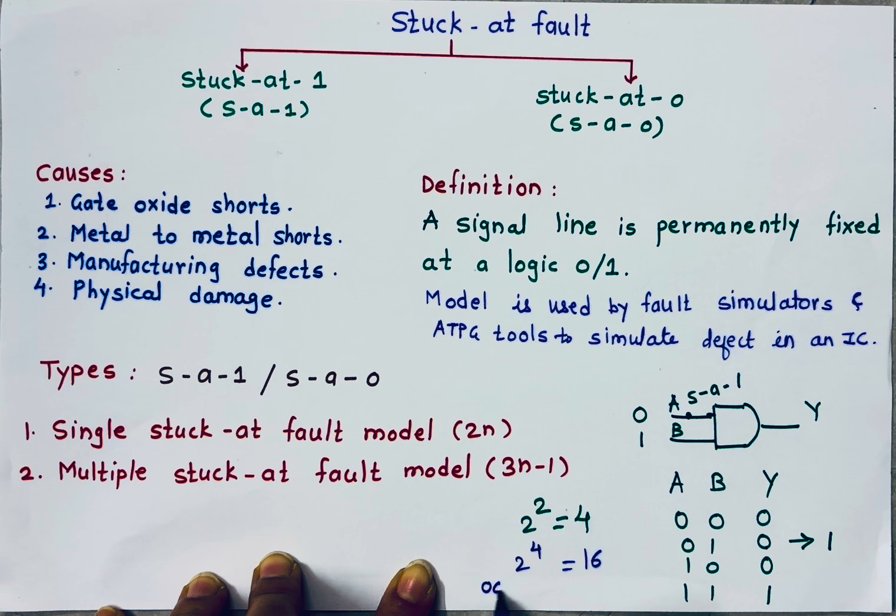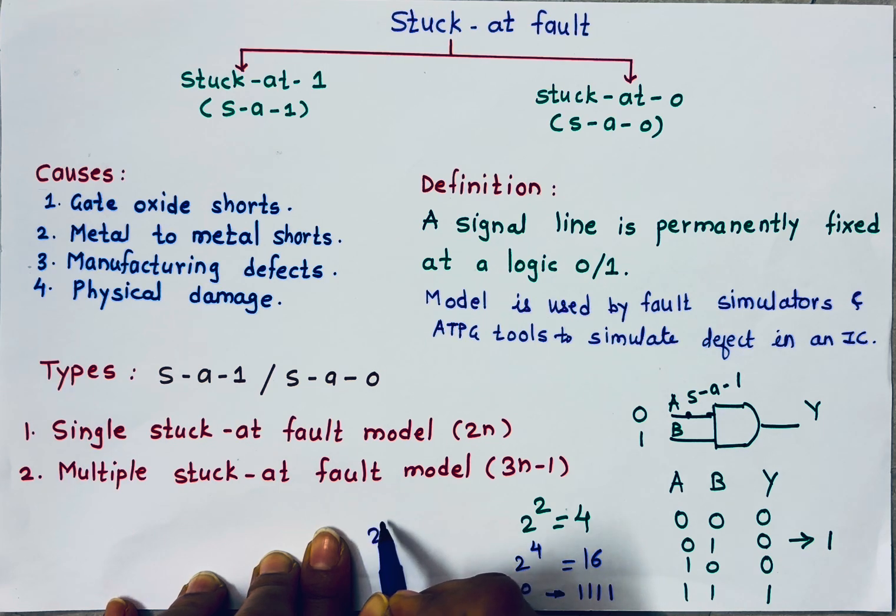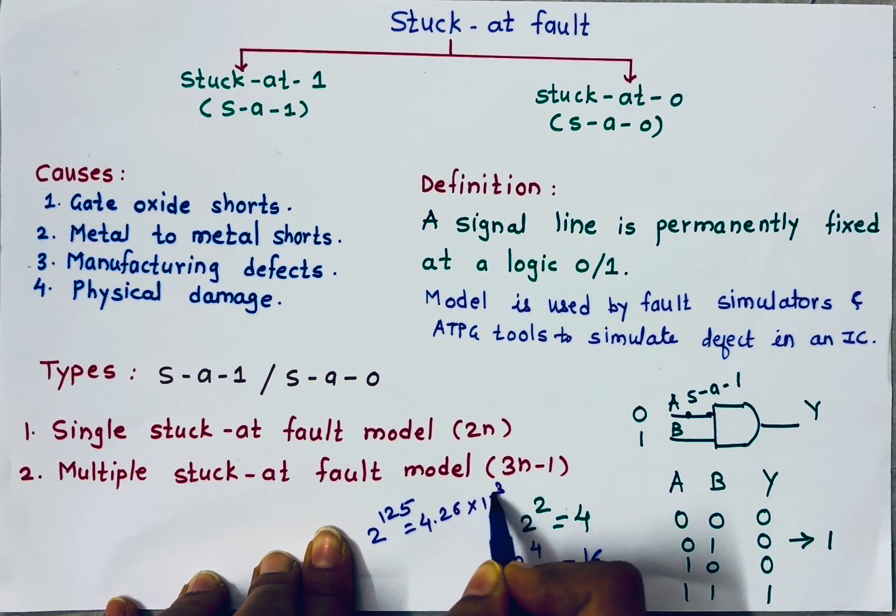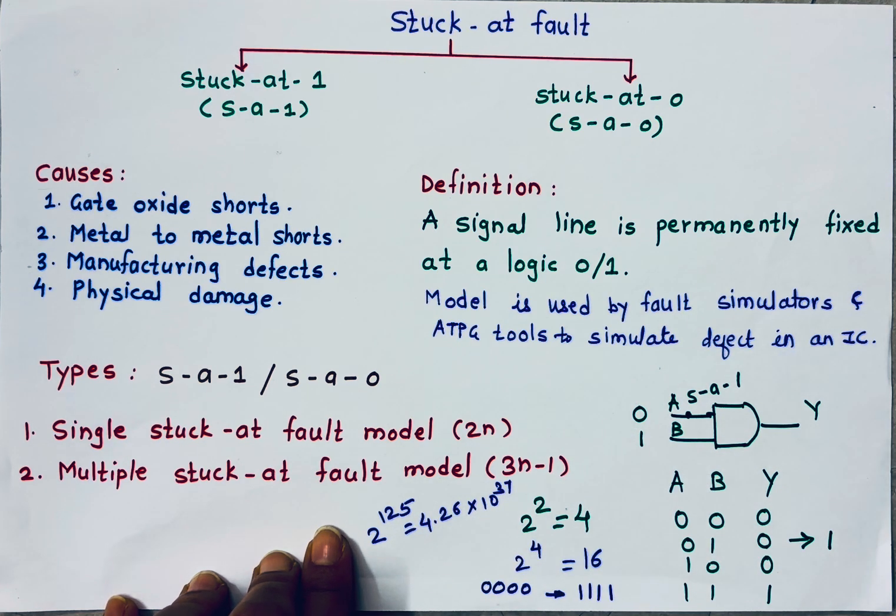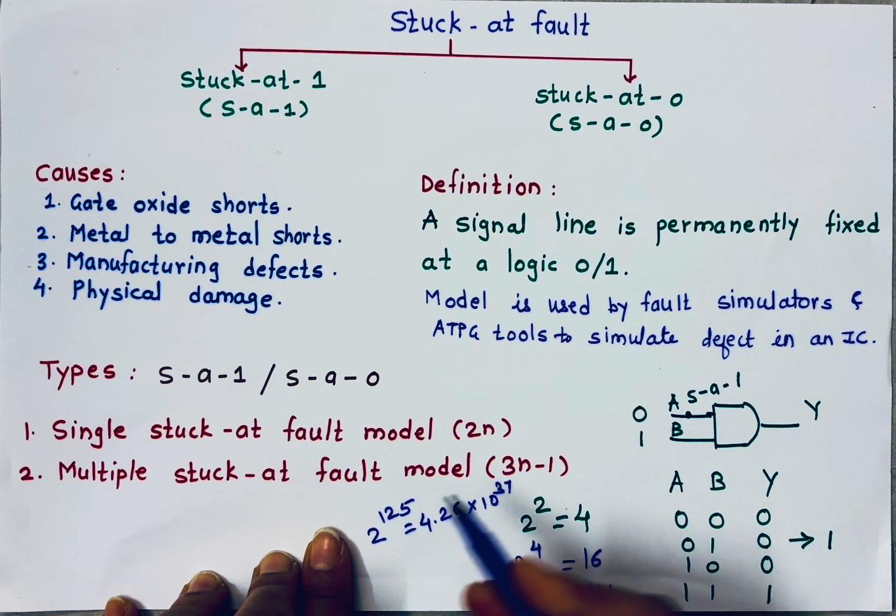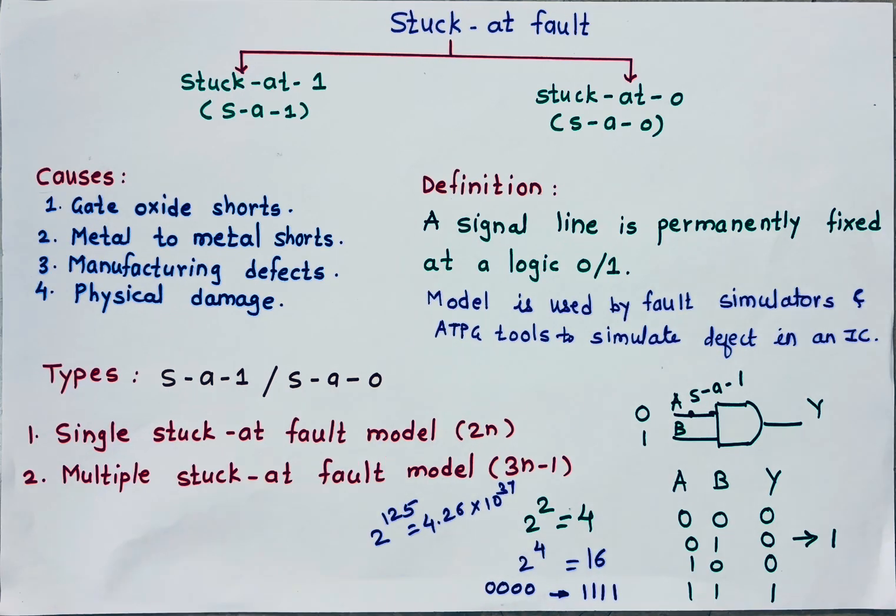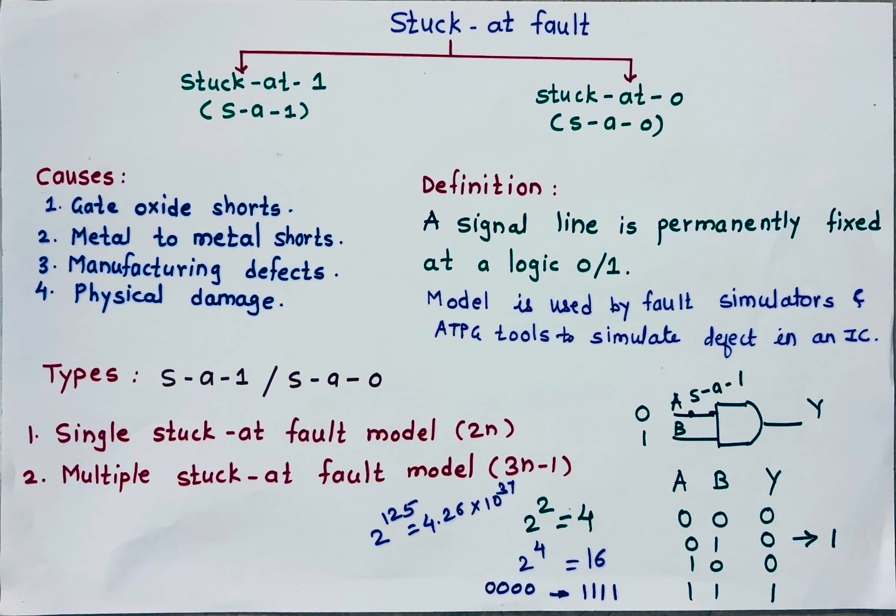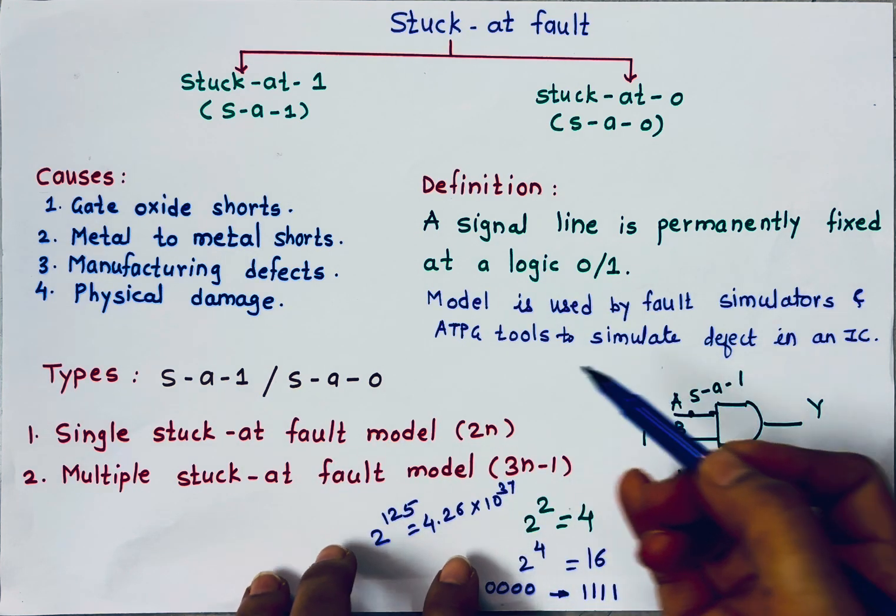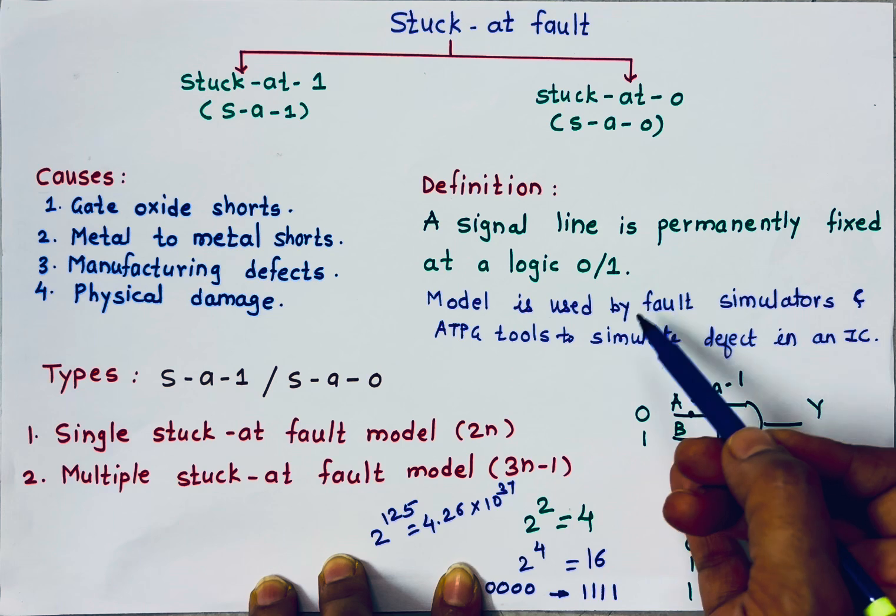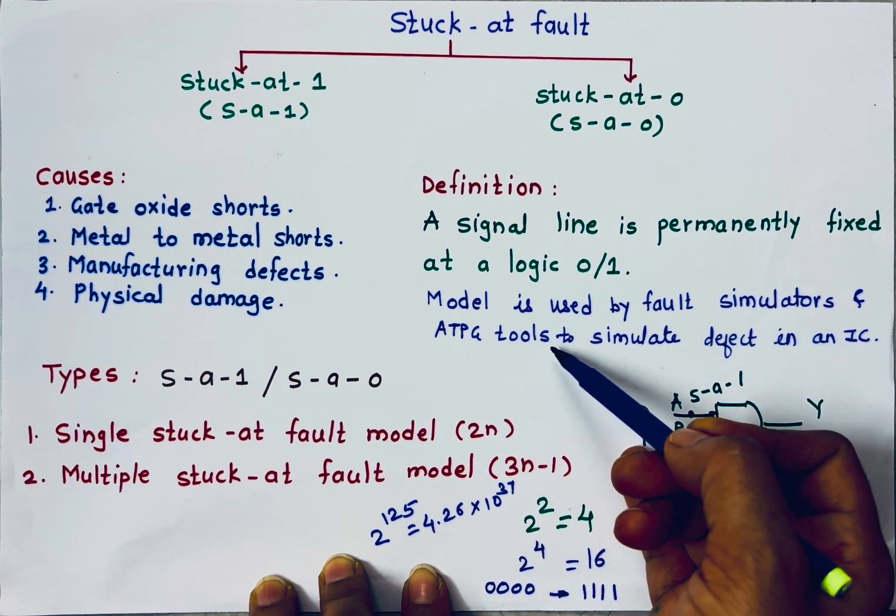But if, let's assume, the number of inputs are 125, then the number of test patterns are 2 raised to 125 and this becomes 4.26 into 10 raised to 37. Even if I am checking my IC, if one pattern is taking 1 second, to test those many inputs, it will take 4.26 into 10 raised to 37 seconds. This approach is very time consuming. To avoid this, fault simulators are employed and automatic test pattern generation tools are used.